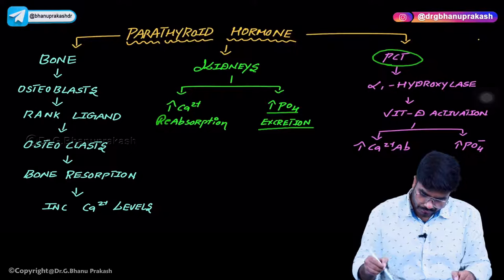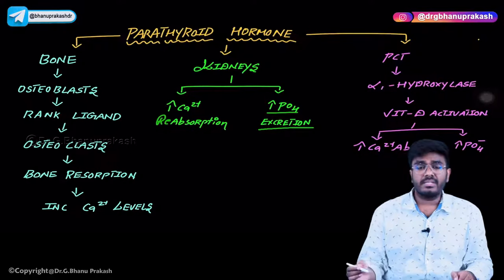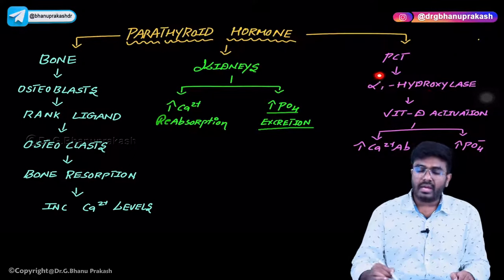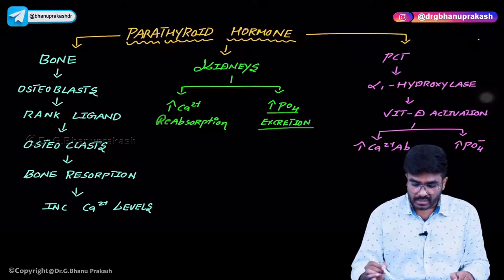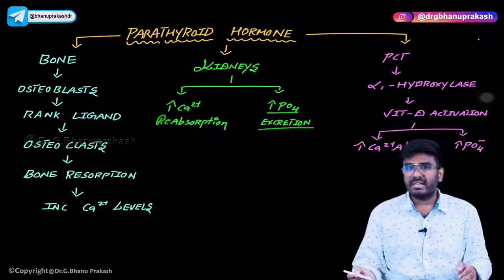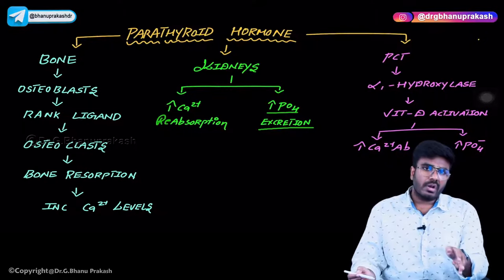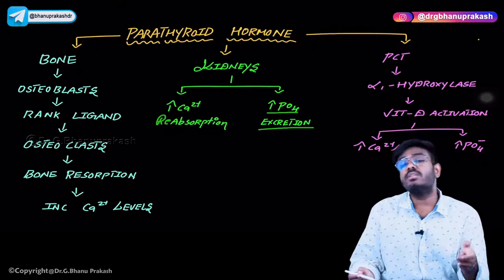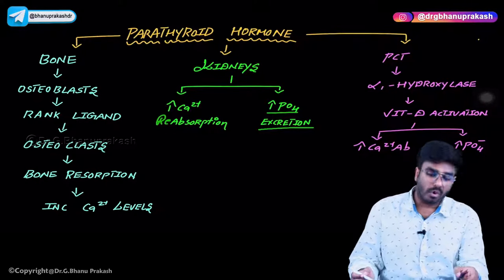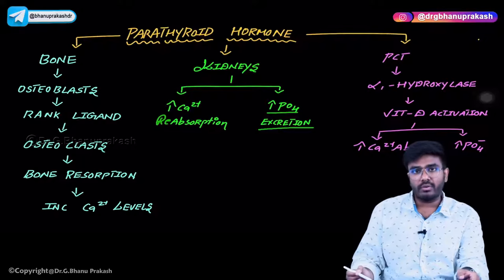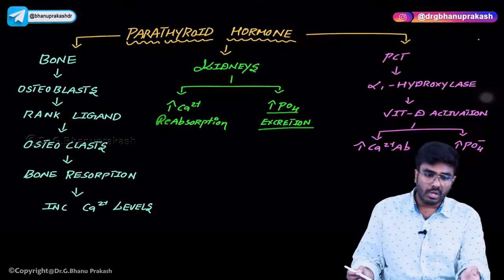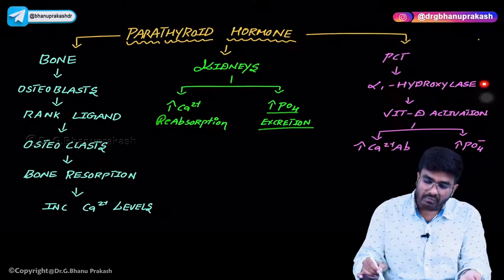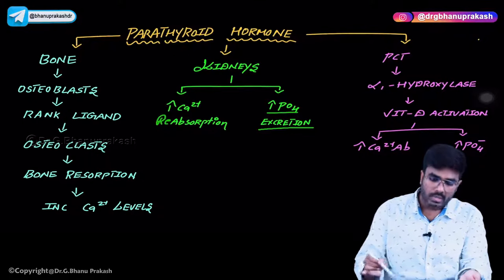PTH also acts on the proximal convoluted tubule (PCT) of the nephron. In the PCT, there is an important enzyme called alpha-1 hydroxylase. When alpha-1 hydroxylase is activated by PTH, vitamin D activation occurs — specifically the conversion of 25-hydroxycholecalciferol into 1,25-dihydroxycholecalciferol. This conversion happens in the PCT and is under the control of PTH.